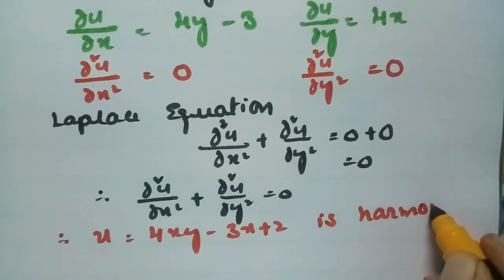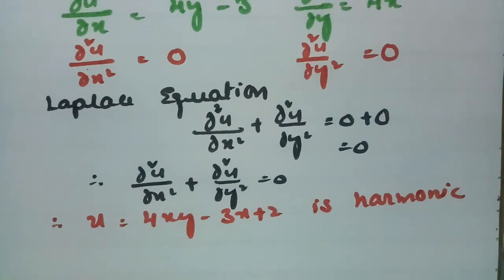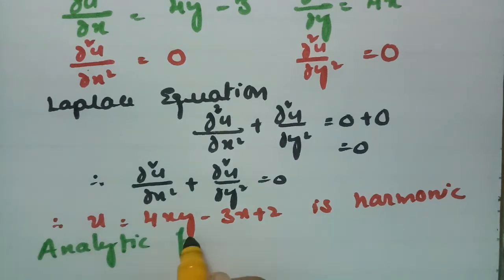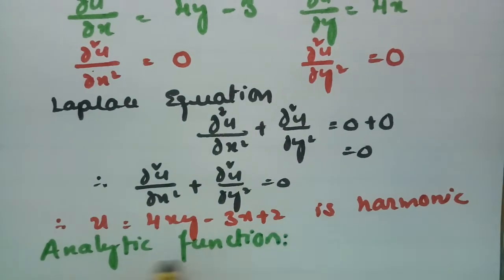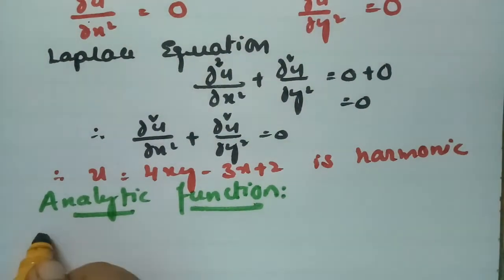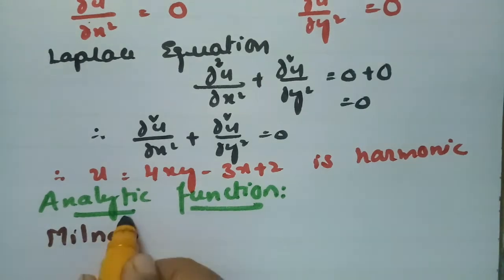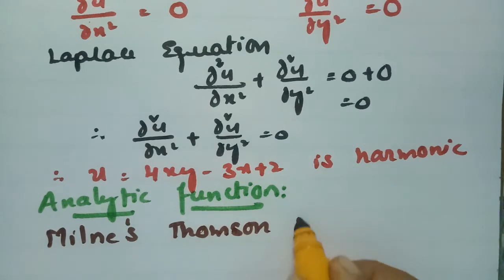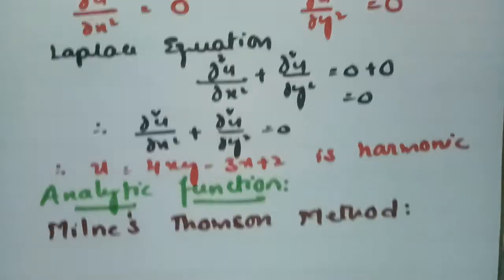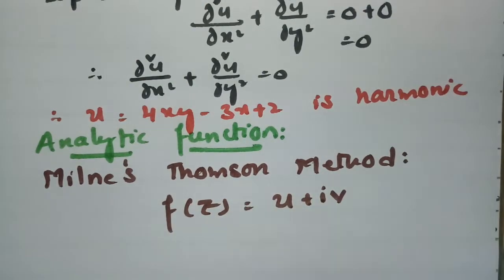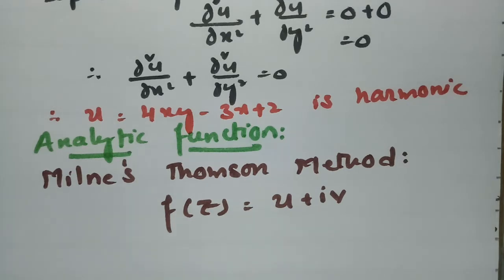Since u satisfies the Laplace equation, it is harmonic. Now we need to find the analytic function. For finding the analytic function, I am using the Milne-Thompson method. According to the Milne-Thompson method, f(z) = u + iv.